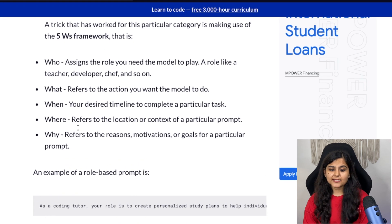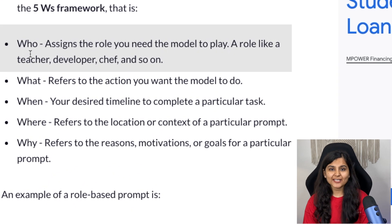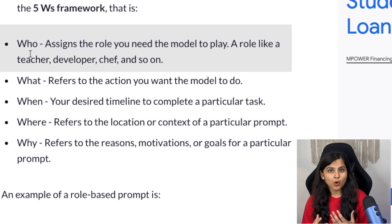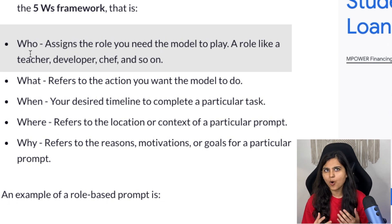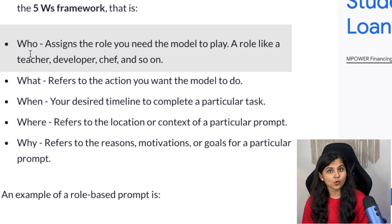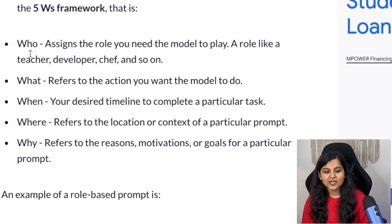The first W is 'who.' We need to assign a role that we want our model — ChatGPT — to play, such as a teacher, developer, chef, and so on. In our case we'll want ChatGPT to become a coding tutor.